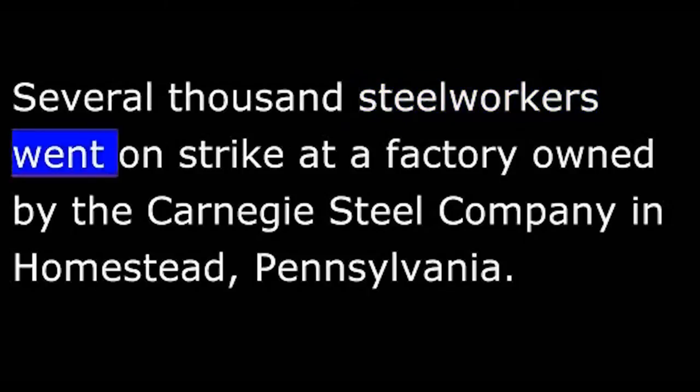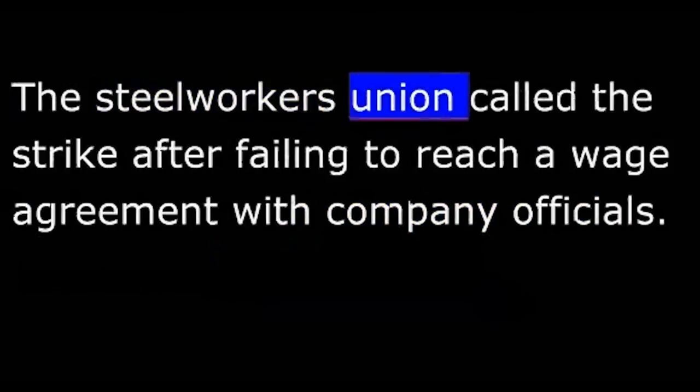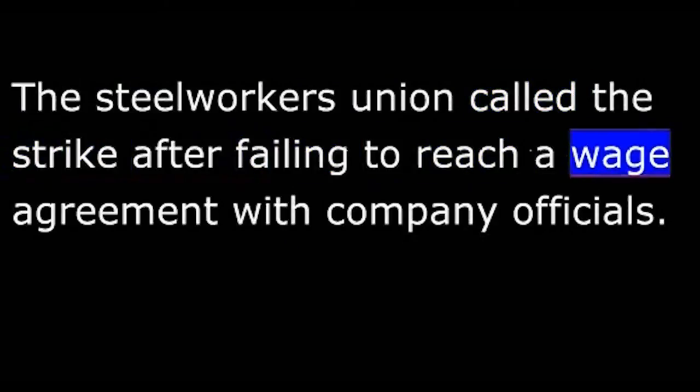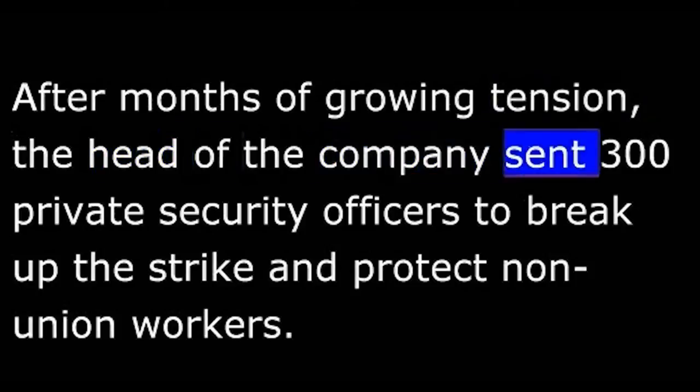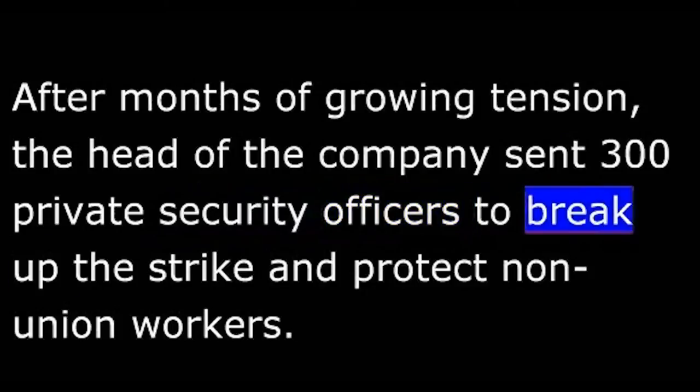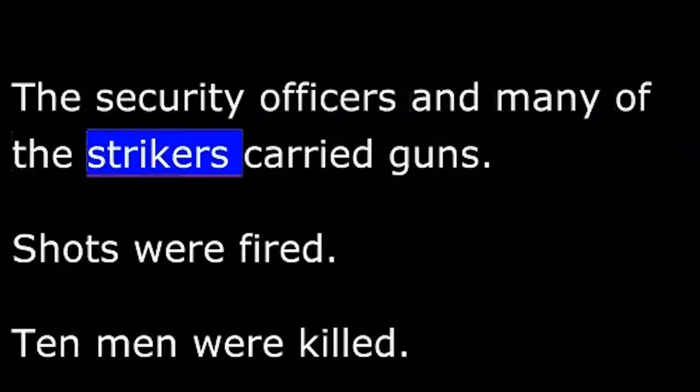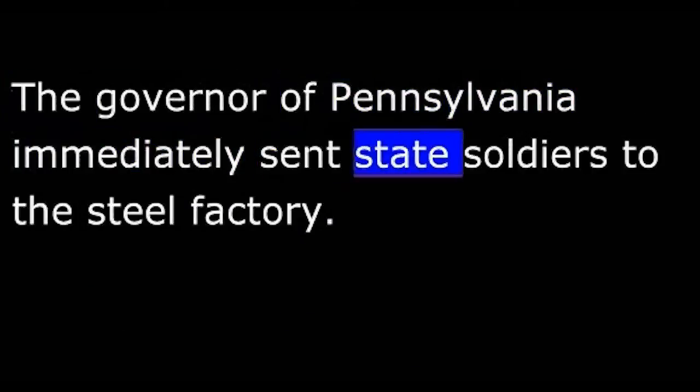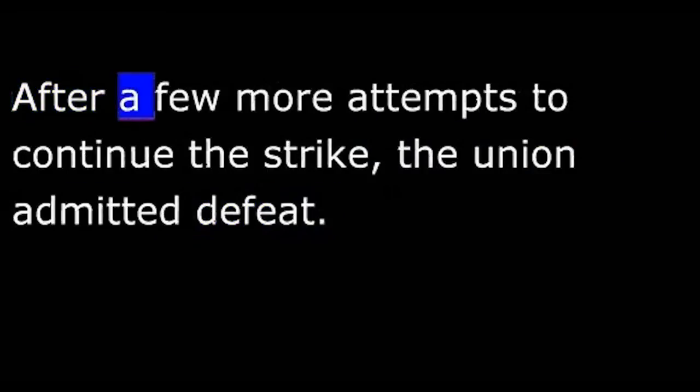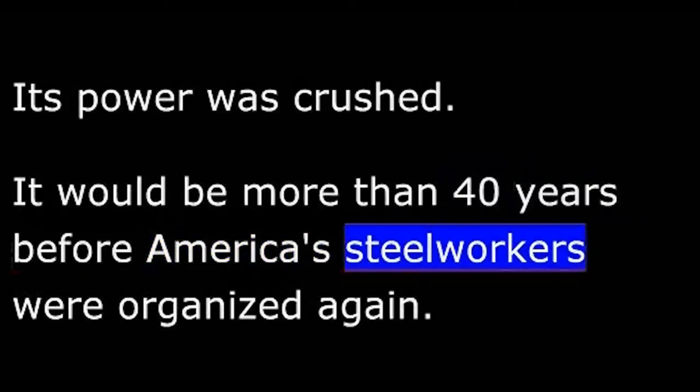Several thousand steelworkers went on strike at a factory owned by the Carnegie Steel Company in Homestead, Pennsylvania. The steelworkers' union called the strike after failing to reach a wage agreement with company officials. After months of growing tension, the head of the company sent 300 private security officers to break up the strike and protect non-union workers. The security officers and many of the strikers carried guns. Shots were fired. Ten men were killed. The governor of Pennsylvania immediately sent state soldiers to the steel factory. After a few more attempts to continue the strike, the Union admitted defeat. Its power was crushed. It would be more than 40 years before America's steelworkers were organized again.